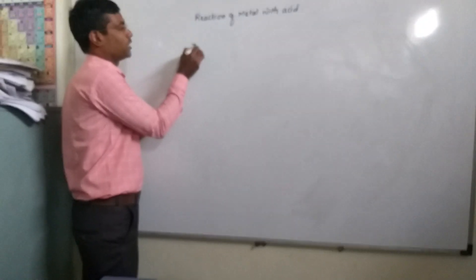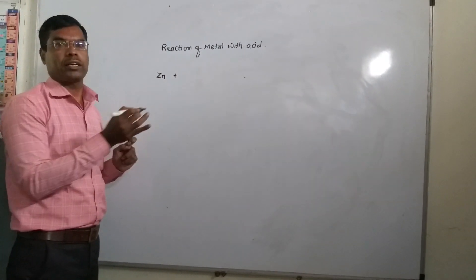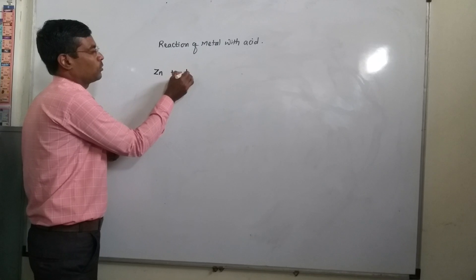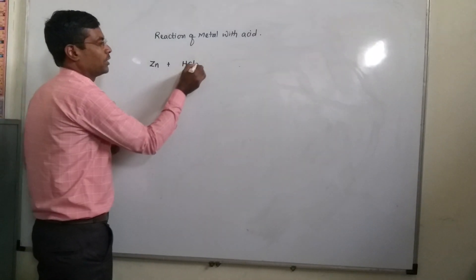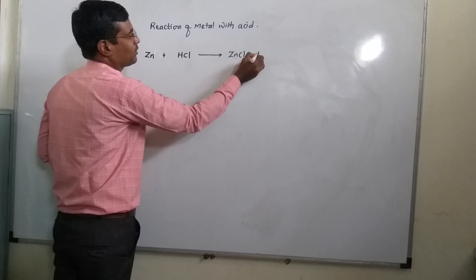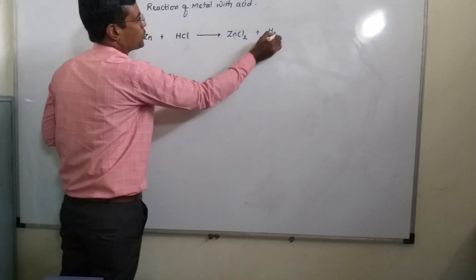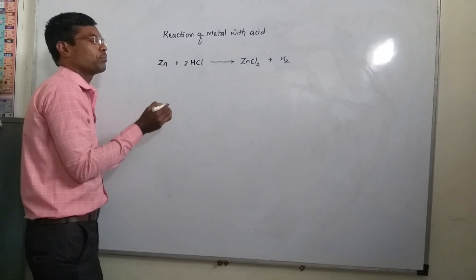Zinc. Good. And what reacts with zinc? Hydrochloric acid. Correct. Zinc plus HCl - the reaction gives the salt ZnCl2 plus H2 gas, correct. So 2HCl is required for balancing purposes.